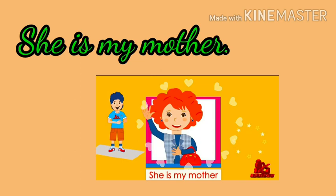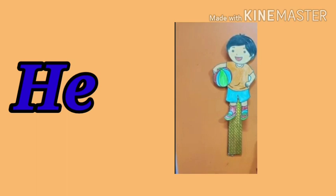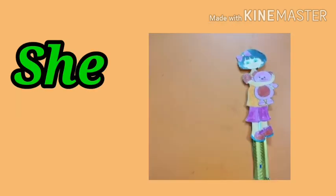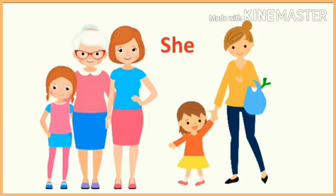Okay, so in the summary of all the discussion, we can say that he is for one boy and she is for one girl. H-E — he is for one boy. That boy could be anybody. And she — S-H-E — she is for one girl. That girl could be anybody: your friend, your mother, your aunt, your sister, anyone.